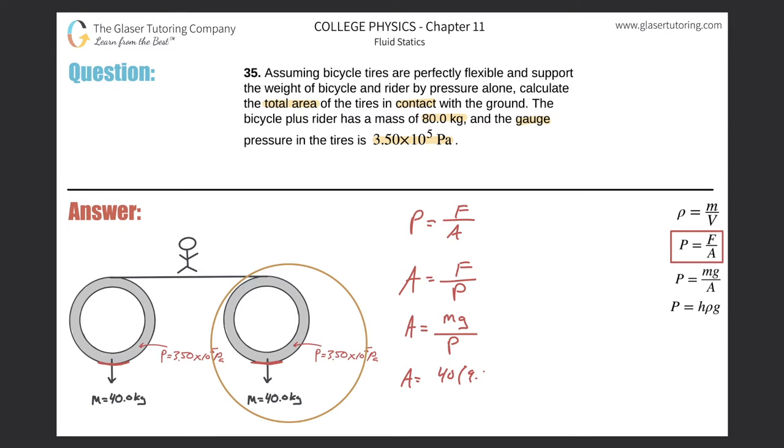Now I can start plugging in my values. The mass was 40 kilograms, gravity is going to be 9.8, and the pressure inside of this tire was 3.50 times 10 to the fifth.